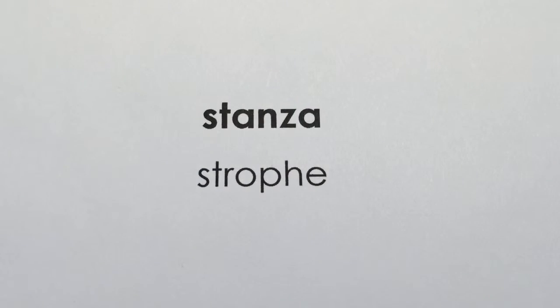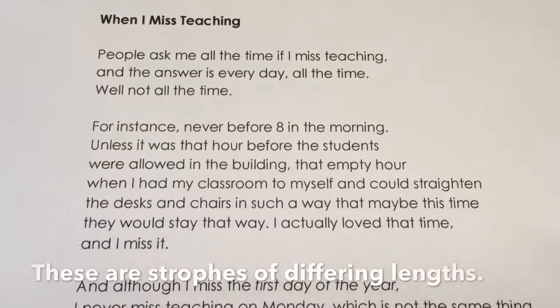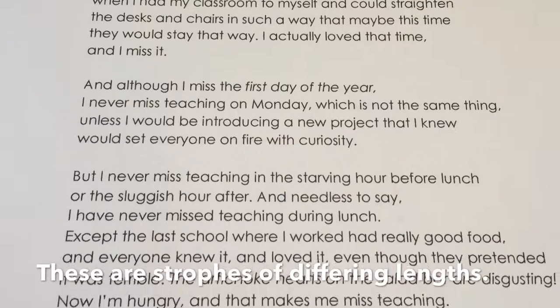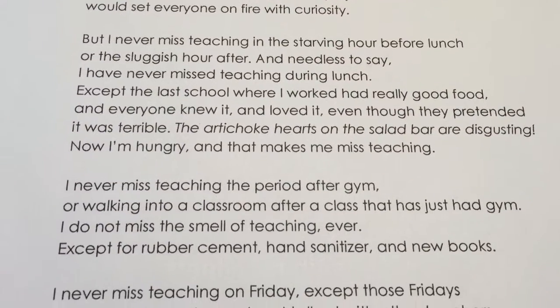Rhyme scheme. Half rhyme — a half rhyme is when it doesn't quite rhyme, but it can still be fun. Next vocab word is stanza. A stanza is a group of lines. Technically, a poem divided up into stanzas — all of the stanzas should be the same length. If they are not, then it's technically called a strophe.